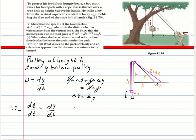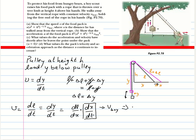dL/dt can be written as dL/dx times dx/dt by the chain rule. The velocity dx/dt is the velocity in the x direction, which is constant and given to be v-boy. So we have v = v-boy times dL/dx.